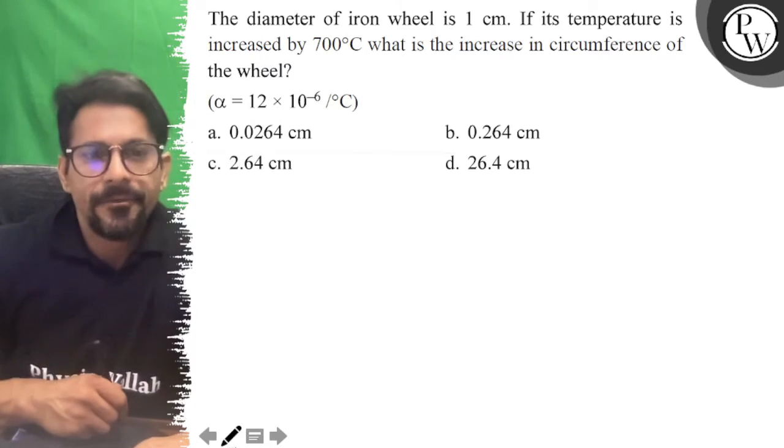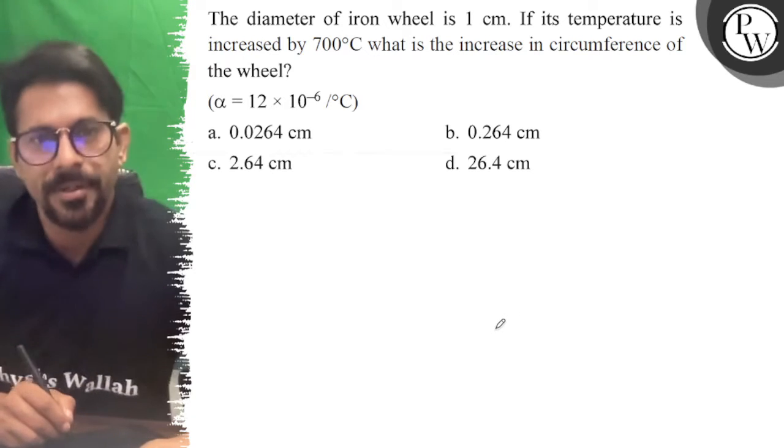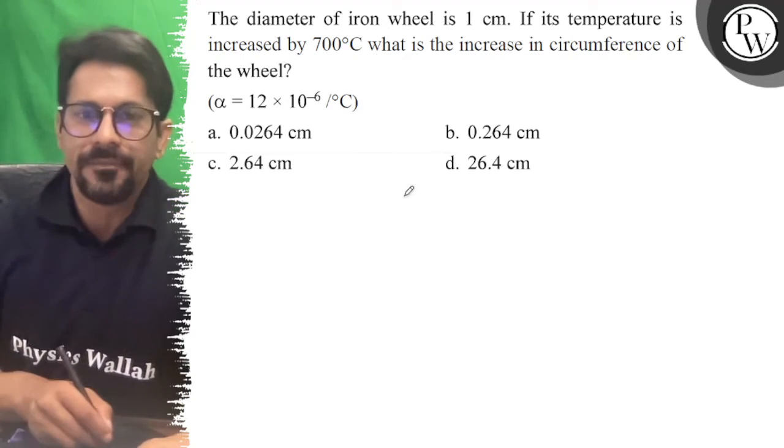Hello everyone, let's see the question. The diameter of iron wheel is 1 centimeter. If its temperature is increased by 700°C, what is the increase in the circumference?